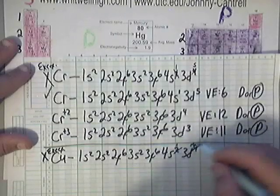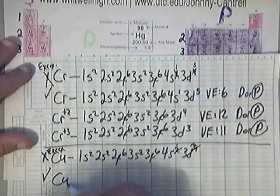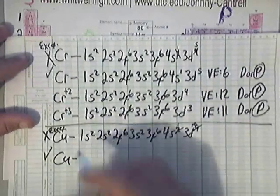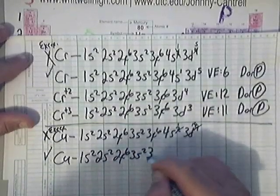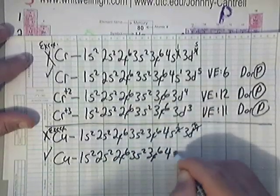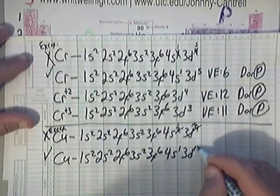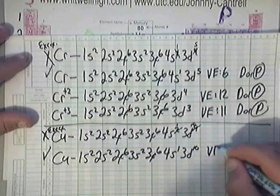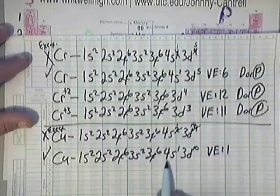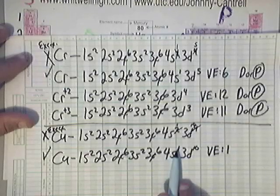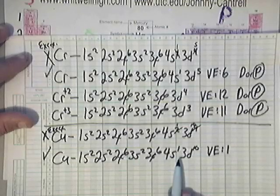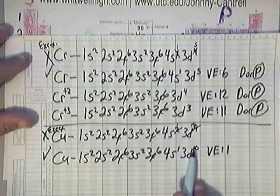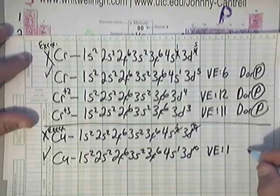So basically, the correct way of writing CU electron configuration is 1S2, 2S2, 2P6, 3S2, 3P6, 4S1, and 3D10. Now remember, the valence electron count of this one is really just one because the highest principal quantum number, the outer orbital, the highest energy level is 4S1 with one electron. But check out this D orbital — it is not partially filled, but completely filled. Since it's completely filled with 3D10, you don't count it. So that's one valence electron.